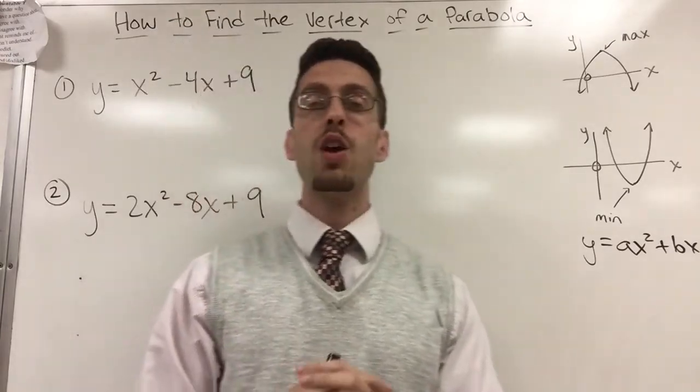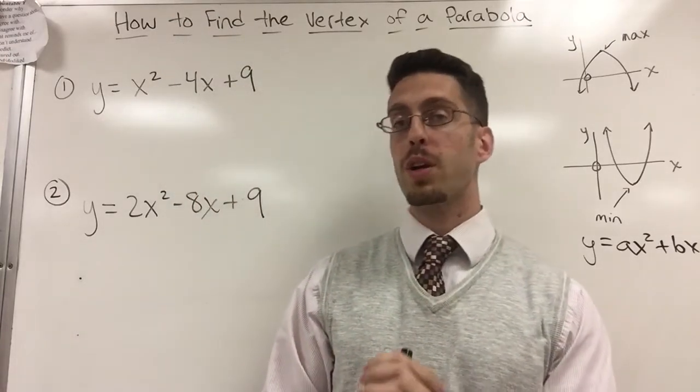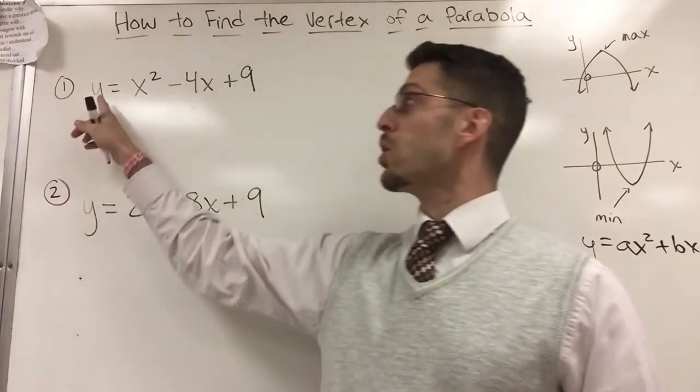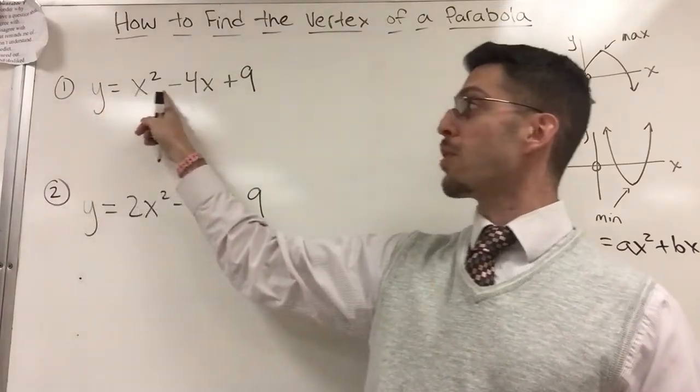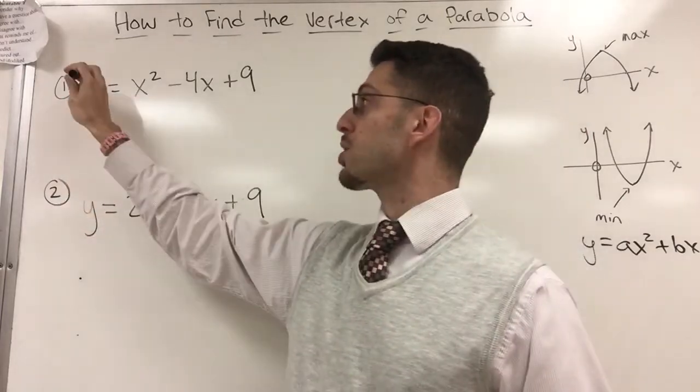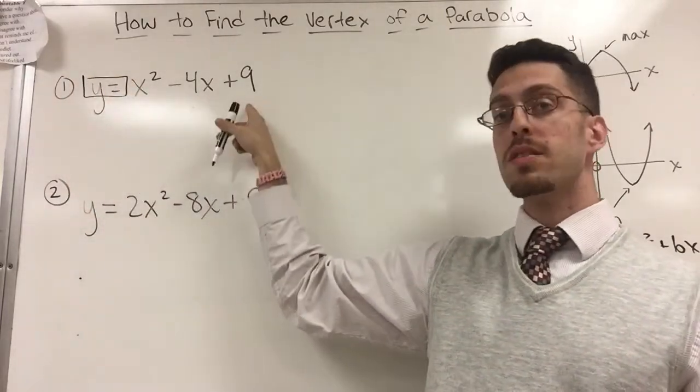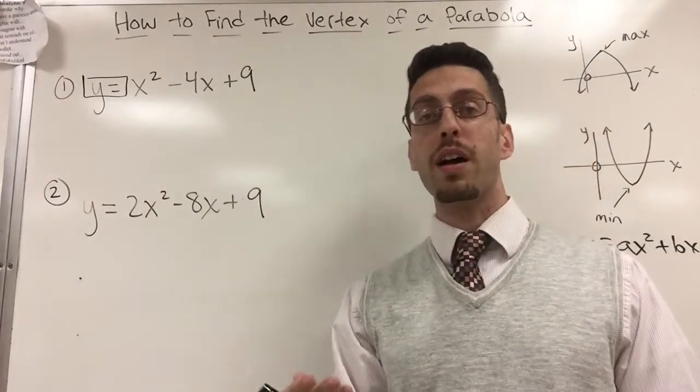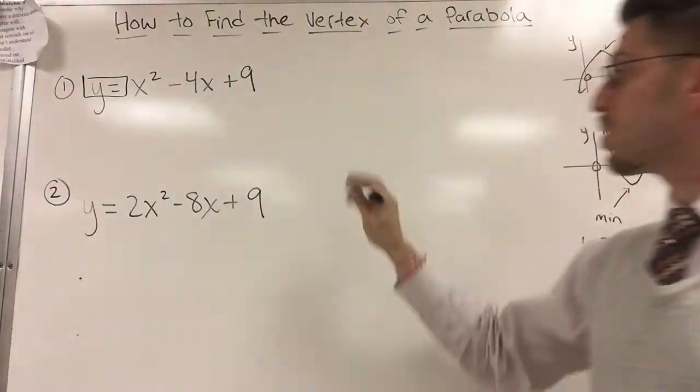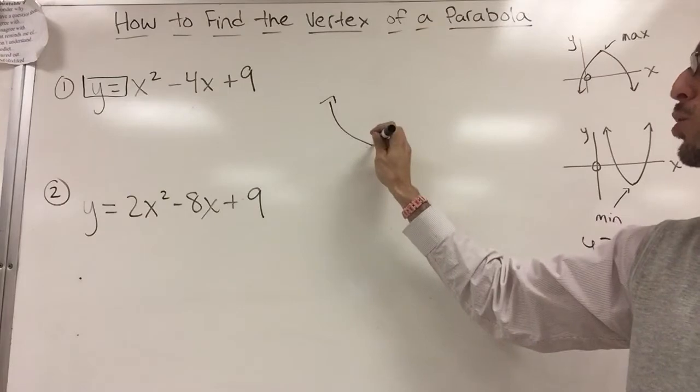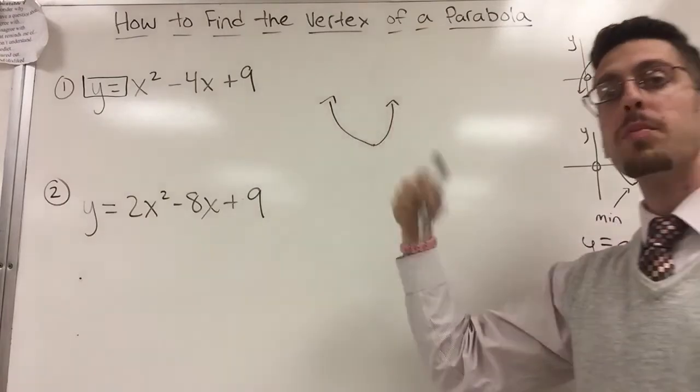So if you take a quadratic and you type it into a graphing calculator, as long as y is alone you can type the rest of this. You go to the y equals button. Hit it and then you type in the rest, and when you press graph you will find a parabola. It will look either like a u-shape or an upside down u-shape.